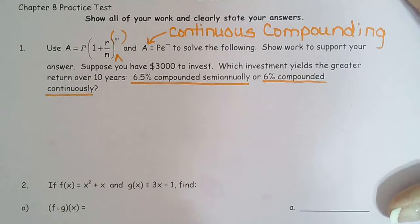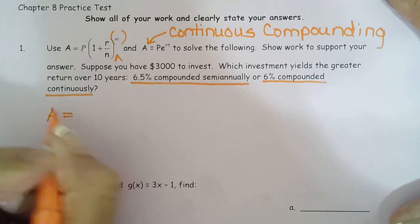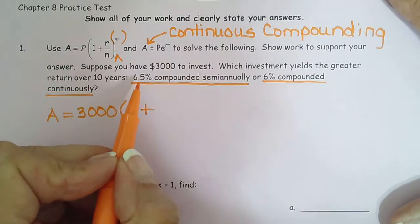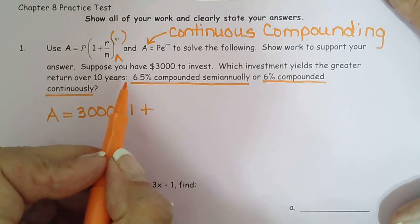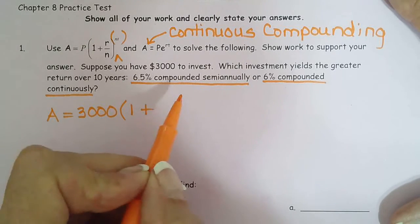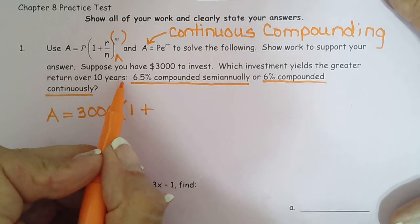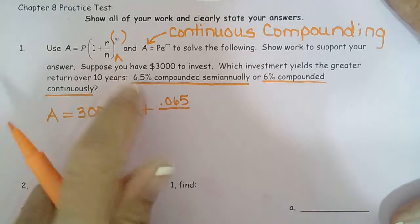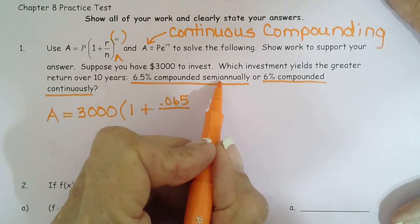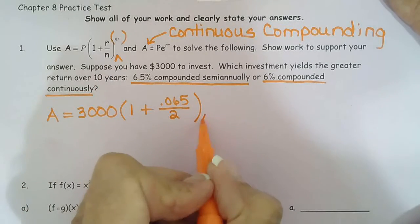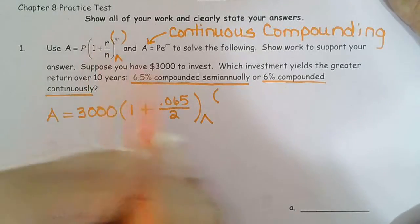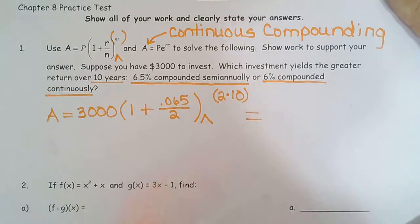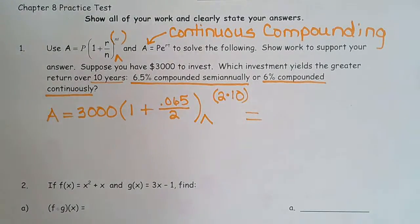Let's see which one gives us the greater yield. For the first one, the amount equals the principal — how much we invest, $3,000 — times parentheses 1 plus the interest rate. Remember, the rate has to be divided by 100 because percent means divide by 100, so the decimal place moves two places to the left. So 6.5% becomes 0.065, divided by N — the number of compounding periods, which is 2 — close parentheses, caret for the exponent, then parentheses N times T: 2 times 10.